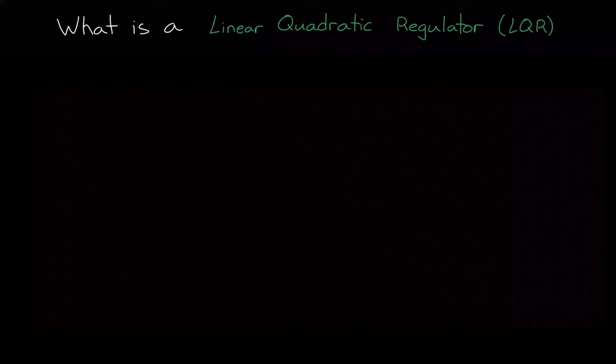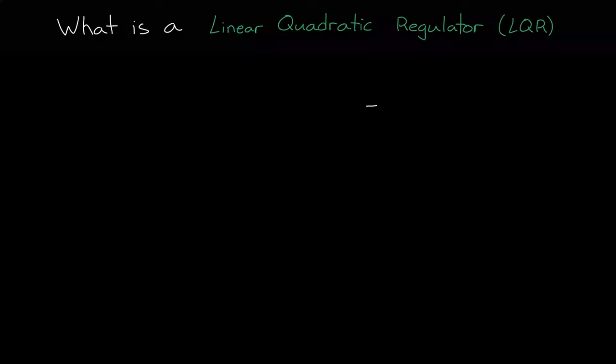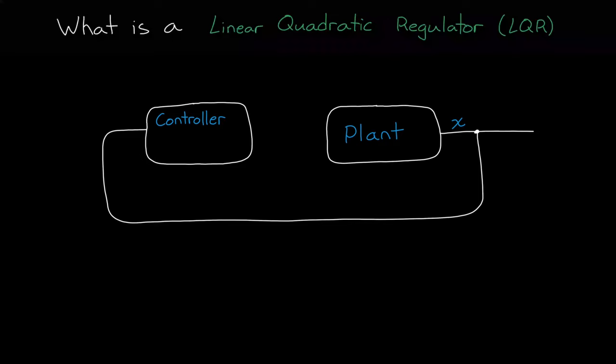Let's set up a simple feedback control system. We have a plant that we're trying to control using full state feedback, and full state just means that every state x is observed and then fed back into the controller, and the controller in this case is just a gain matrix minus k, which is multiplied with x to create the input u, which goes back into the plant.